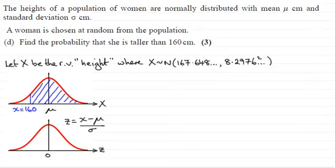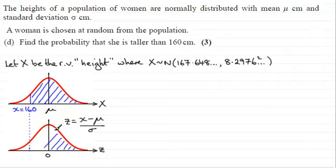It's a good idea to have a rough idea of the expected answer, because sometimes when looking up tables it's easy to trip up. What we do is project this down onto our standardised normal distribution curve, and this area here is exactly the same as the area we're trying to find.